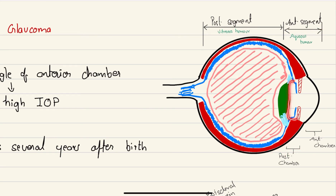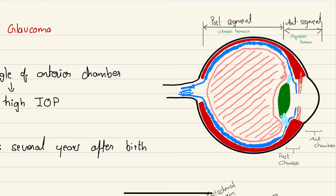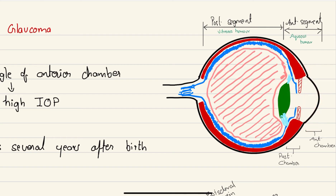The anterior chamber is between the iris and the cornea. So it is the iris which divides the anterior segment into the posterior chamber and anterior chamber. The anterior segment is filled with fluid called aqueous humor, and the posterior segment is filled with vitreous humor. Aqueous humor is responsible for maintenance of pressure inside the eye.